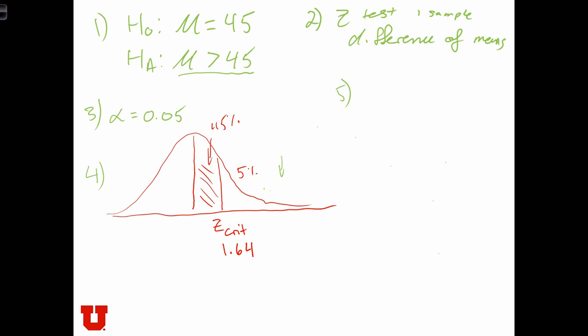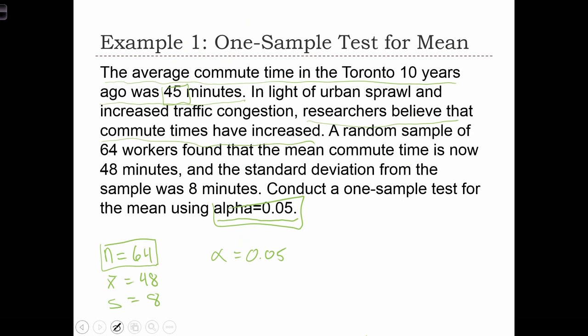Step 5 is to compute the Z-score. So Z equals X-bar minus mu H over the standard error of the mean. X-bar was 48 minus 45. And the standard error of the mean is S over root N. 8 over root 64, which is just 8. So this is equal to 3.